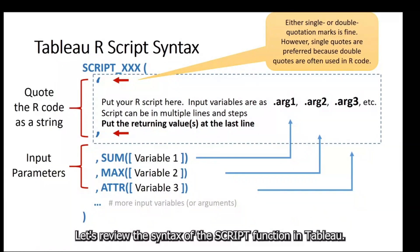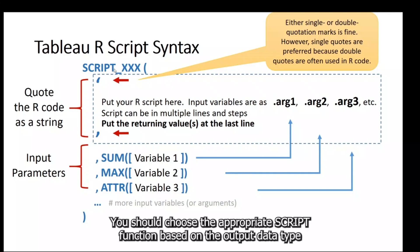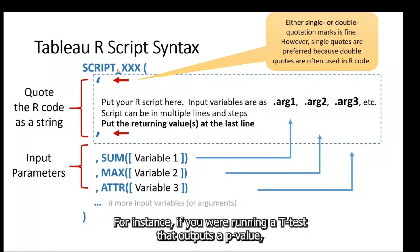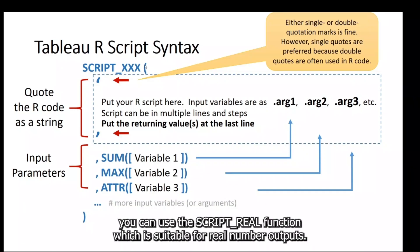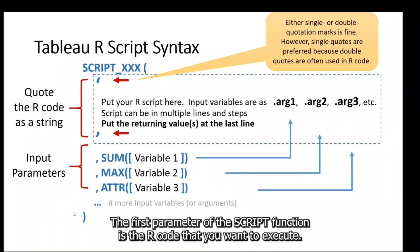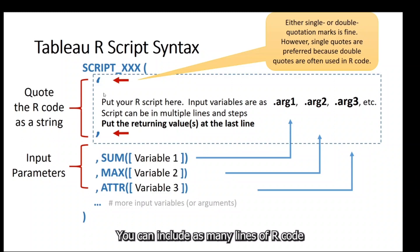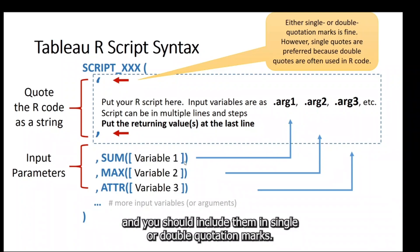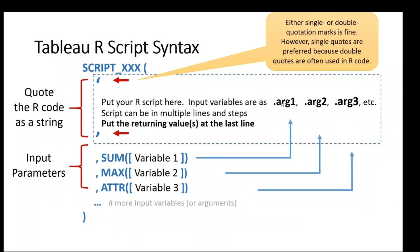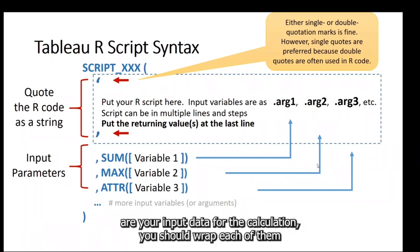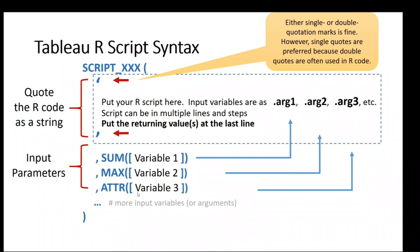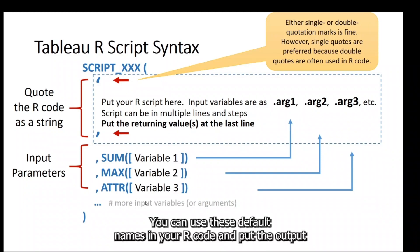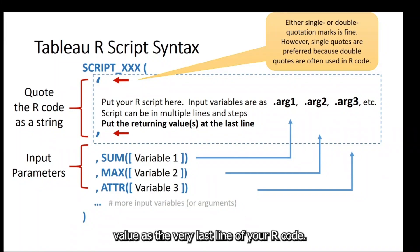Let's review the syntax of the script function in Tableau. You should choose the appropriate script function based on the expected output data type. For instance, if you are running a t-test that outputs a p-value, you can use the SCRIPT_REAL function, which is suitable for real number outputs. The first parameter is the R-code to execute, enclosed in single or double quotation marks. The second and remaining parameters are your input data, each wrapped with an aggregate function and separated by a comma. The first input data is named .arg1, the second .arg2, and so on, and you can use these names in your R-code with the output value as the very last line.